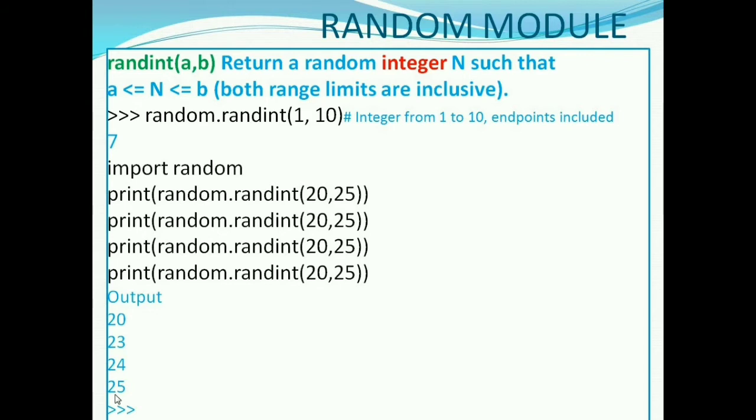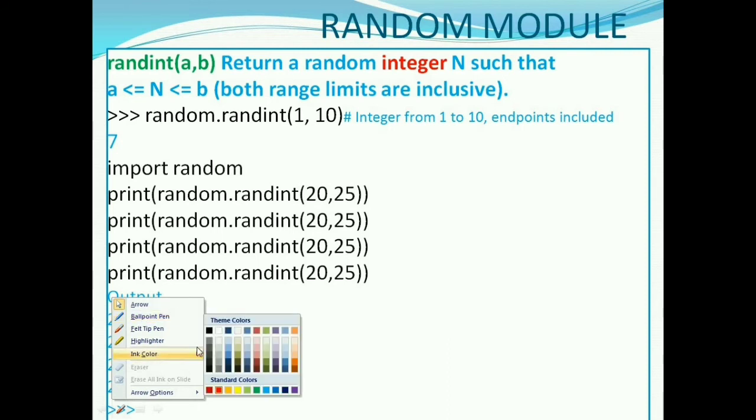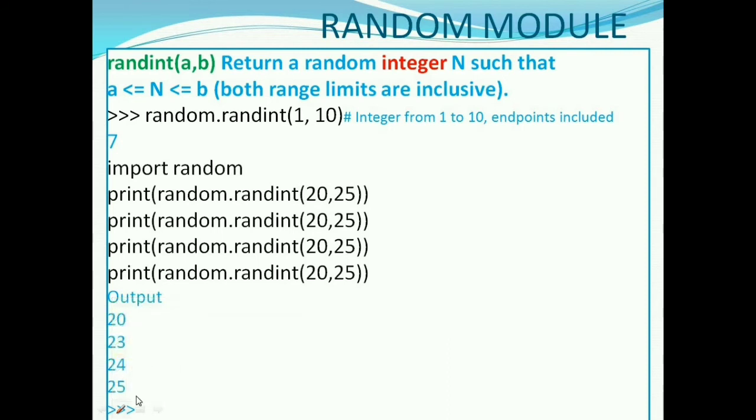If you want to generate random numbers from 20 to 25, then we should use randint 20 to 25. Remember, it will generate only integer numbers and both 20 and 25 will be included, that means it can generate any integer number between 20 to 25 and 20 and 25 are included.